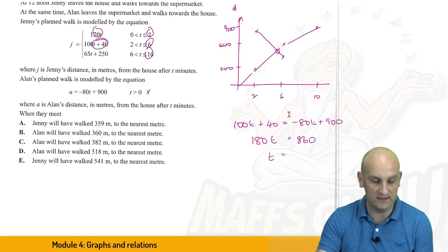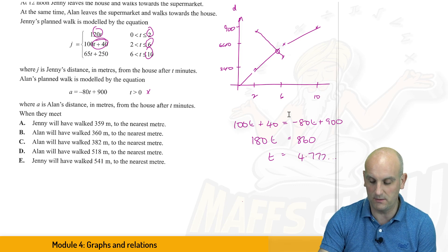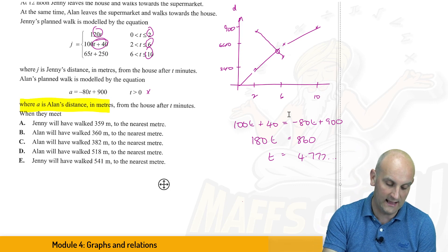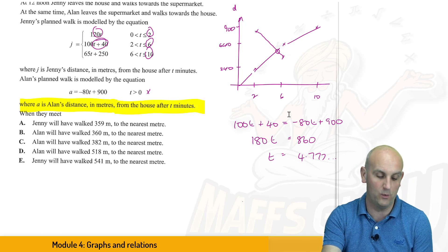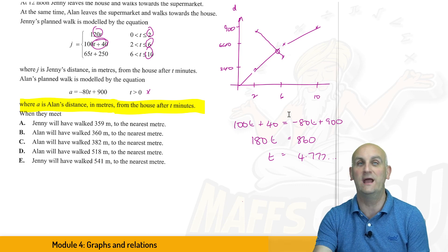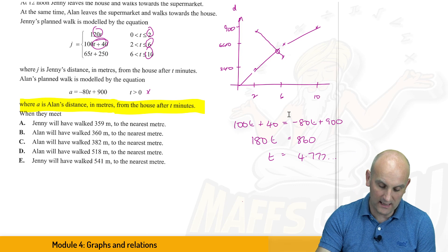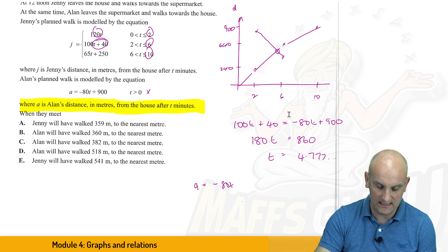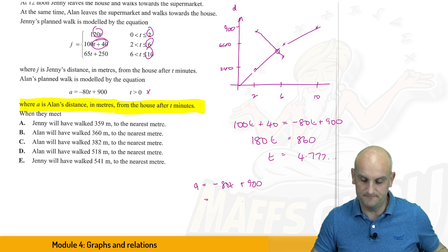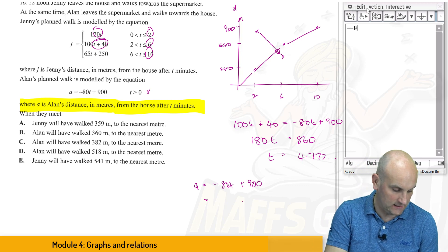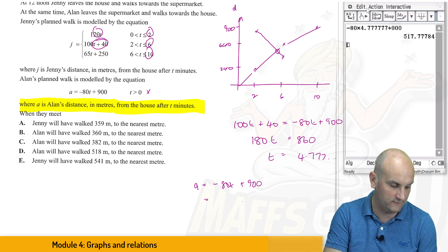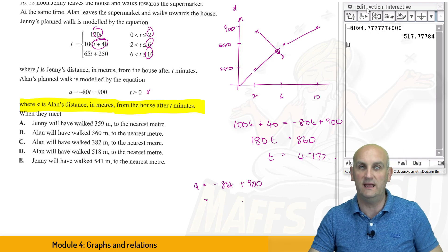And t, when I put it into my calculator, came out as 4.777 and so on. Now what that meant was that was the time they met, but that wasn't what the question wanted. The question said, what is Alan's distance away from the house? We want to know what the value of the distance is Alan is away from the house when they meet. Right. So when I have my equation, a is equal to minus 80t plus 900, and I put 4.77 in. Let's fire up my calculator. What I need to do then is go minus 80 times by 4.777, and we're going to then add 900 to that, if you would be so kind. Which gives me about 518 meters.